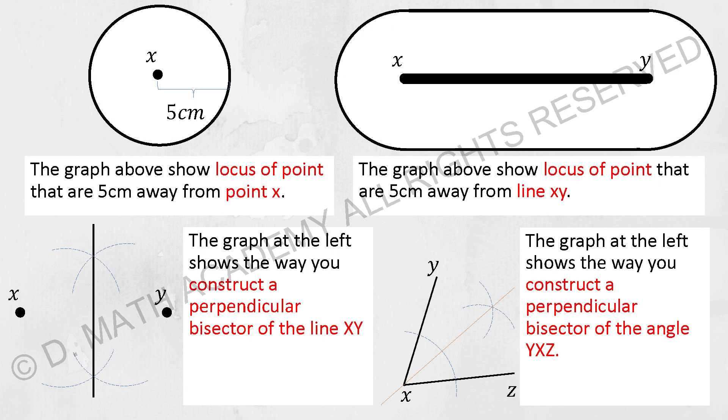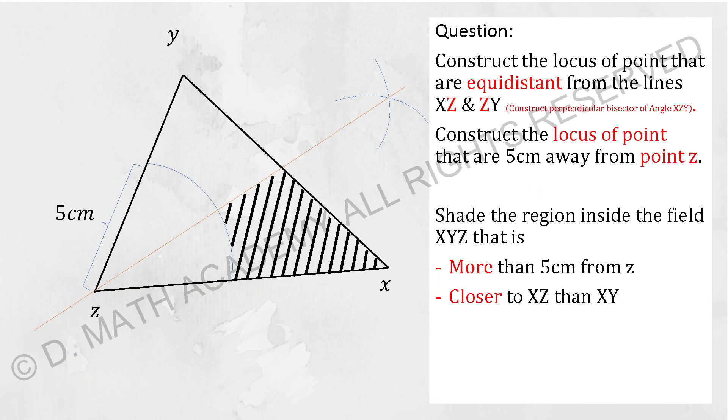This perpendicular bisector basically splits up the angle of YXZ into two equal parts. If let's say YXZ is 60, then it was being split into 30 and 30.